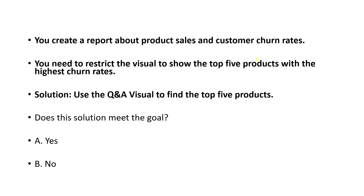Next question: you create a report about product sales and customer churn rates. You need to restrict the visual to show the top five products with the highest churn rate. The keyword here is 'restrict' — you need to restrict the visual. Using Q&A visual or 'find' is wrong here. The correct answer involves applying a Top N filter to restrict the visual to the top five products.